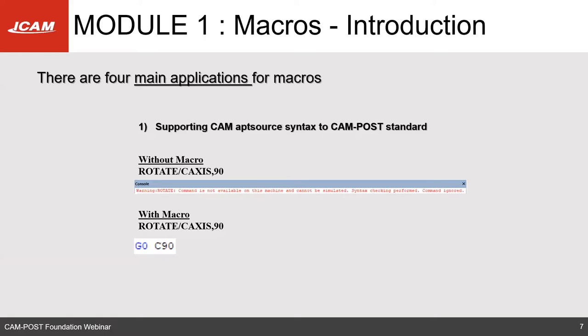There are four main applications for writing macros. The first is to support APT syntax that is non-ICAM standard. For example, 'ROTATE/CAXIS 90' is not a default standard ICAM post command — you'll likely get an error or warning that the syntax is incorrect or that this command does not exist on the machine. To avoid that error, you would write a macro to output a different command, such as a go-to or move-to command to generate the C axis motion.